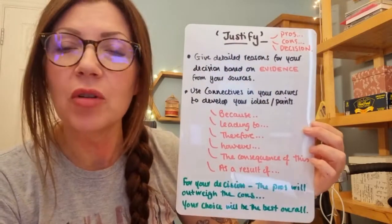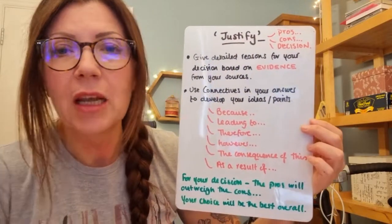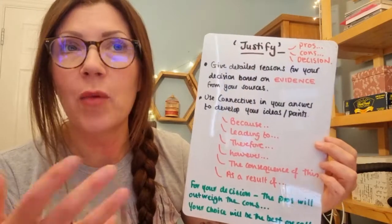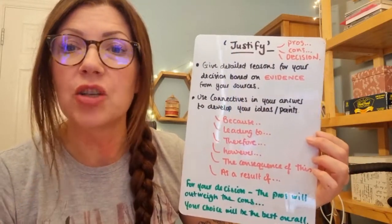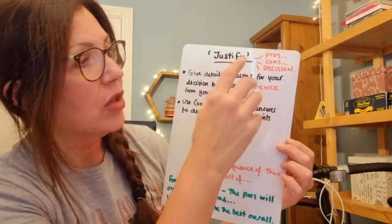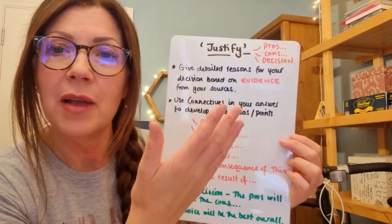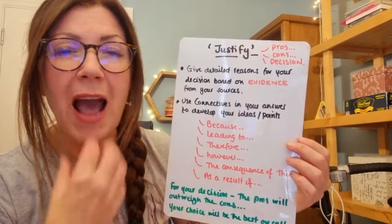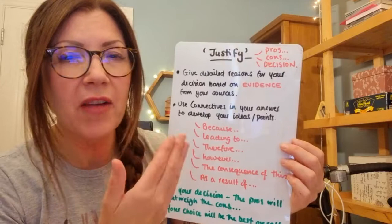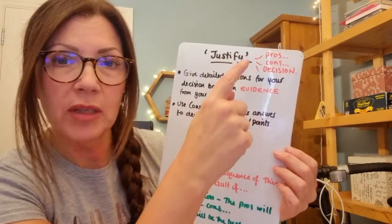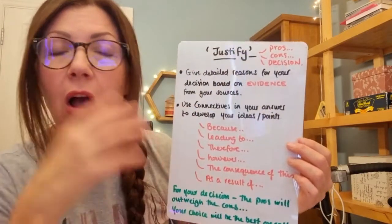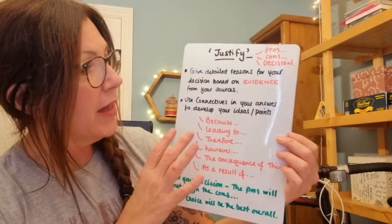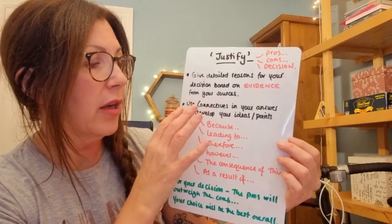If we have multiple sources for the one child policy, we need to look at the pros and cons and then come out with a decision over whether we think that policy should have been introduced. So we will be talking about what the pros of the policy are, what the cons are, and then making a decision to justify our answer — whether the one child policy was a good idea or not.